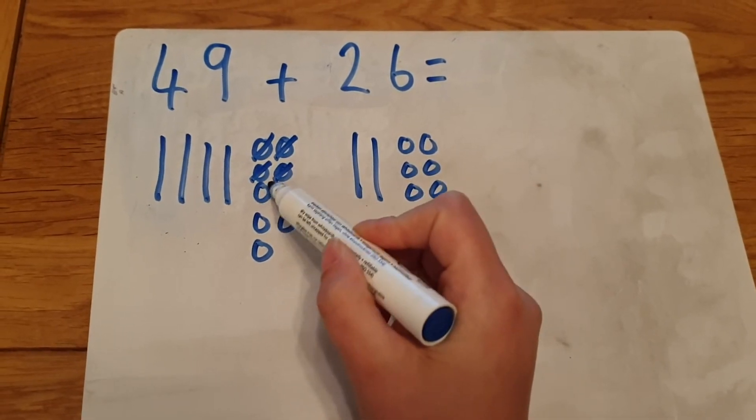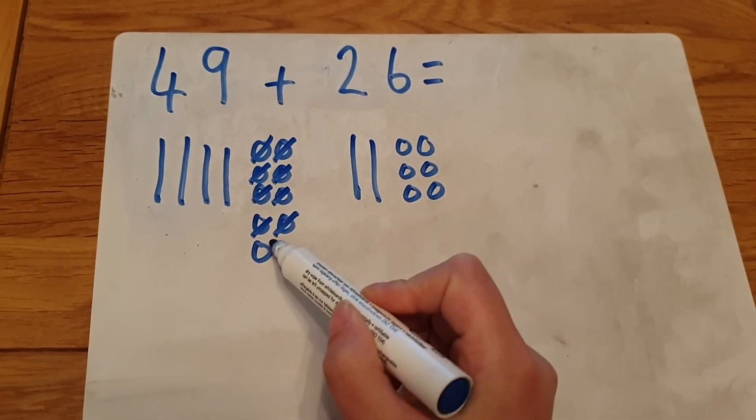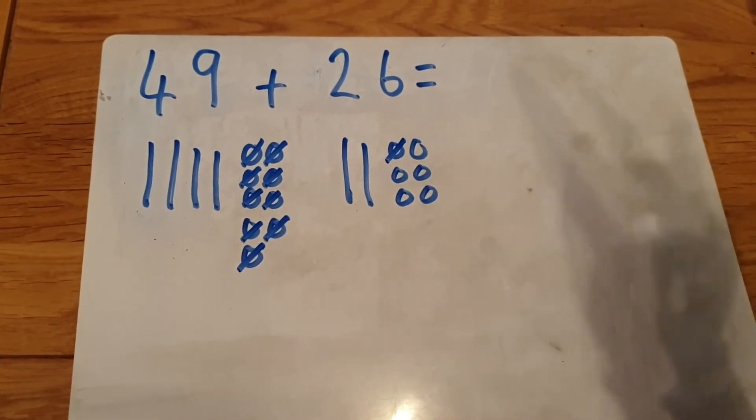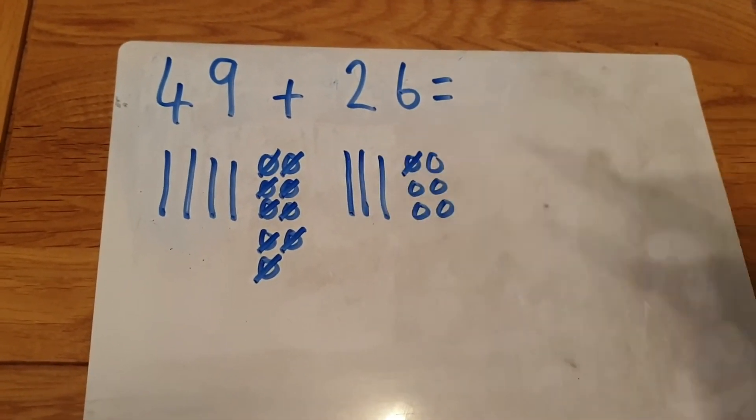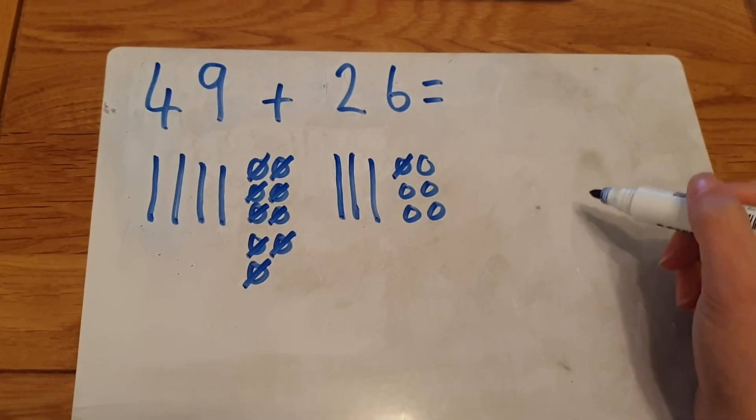One, two, three, four, five, six, seven, eight, nine, ten. Then remember to exchange it for another ten because ten ones is equal to one ten.